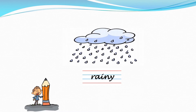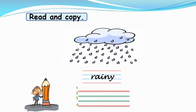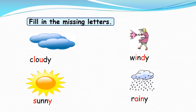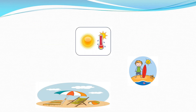What is the weather like today? The weather is sunny, windy, cloudy, or rainy. Fill in the missing letters — of course it's very easy: cloudy, windy, sunny, and rainy.